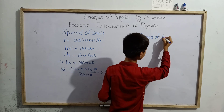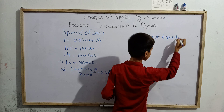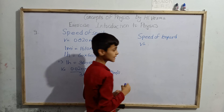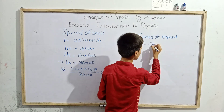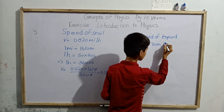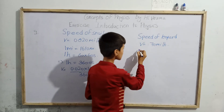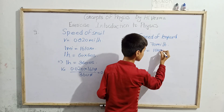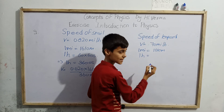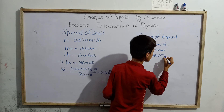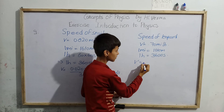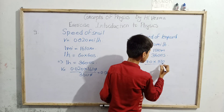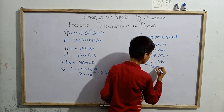The speed of the leopard, let us call it v dash, equals 70 miles per hour. Using the same conversion: one mile equals 1610 meters and one hour equals 3600 seconds. So v dash equals 70 multiplied by 1610, divided by 3600.